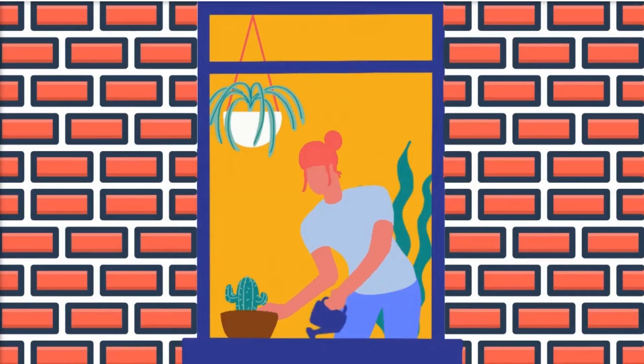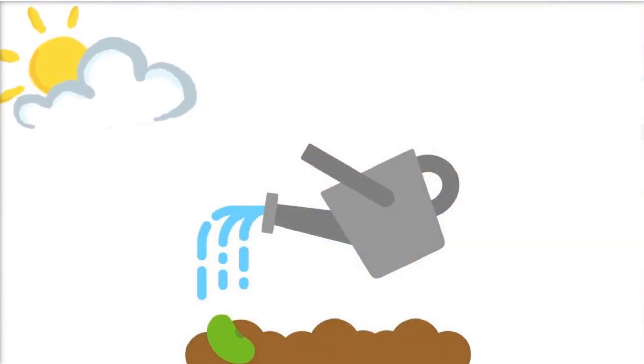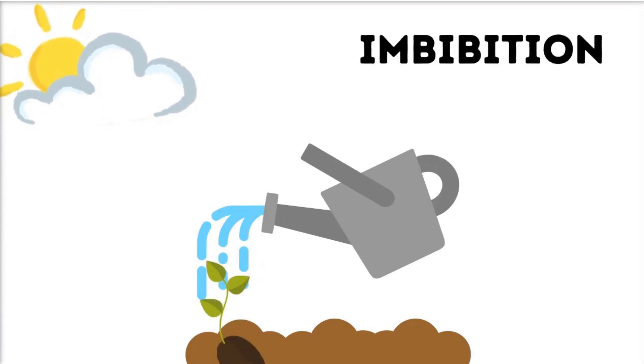In order for a plant to grow healthy, it undergoes different physiological processes. A dry seed will uptake water through the soil that causes swelling. This will initiate its growth. The process of diffusion of water to be absorbed is called imbibition.